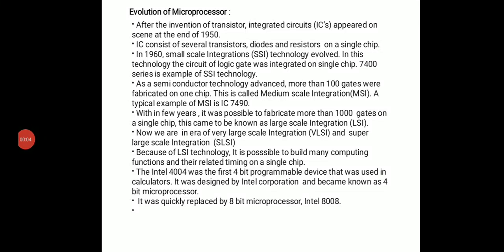Today we start Paper 2, first chapter: introduction of microprocessor. The first topic is evolution of microprocessor. Today's microprocessors are mostly 32-bit or 64-bit. A microprocessor is a programmable logical device that reads data in the form of binary and after processing gives the output — that is the work of a microprocessor.